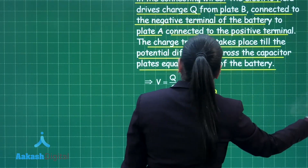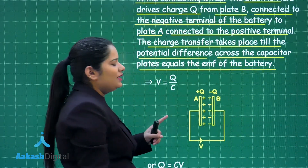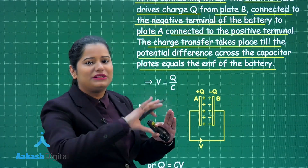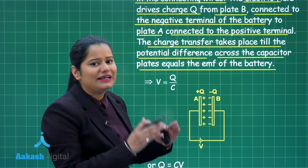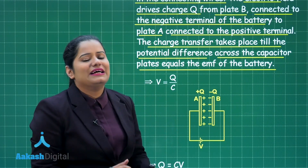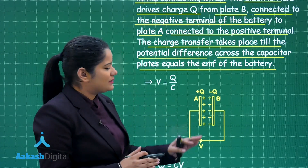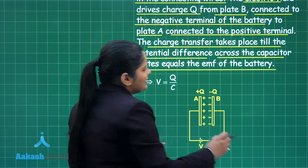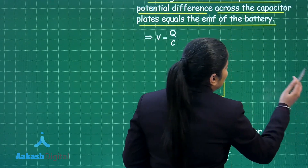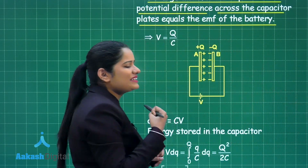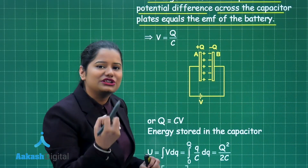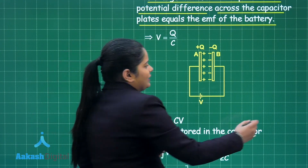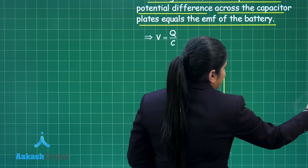So what will that be? V will be equal to Q by C, where Q is the charge that is transferred and C is the capacitance of this parallel plate capacitor. Further, this question wants us to derive the expression for the energy stored in the capacitor, and we need to do the derivation for that.